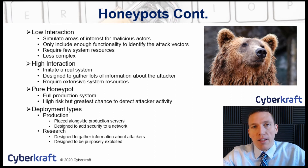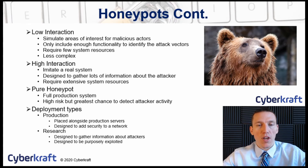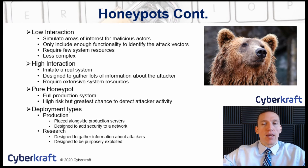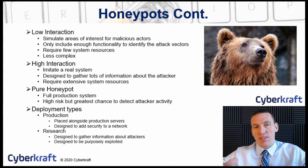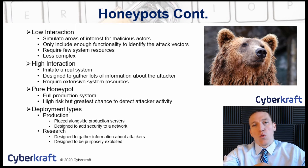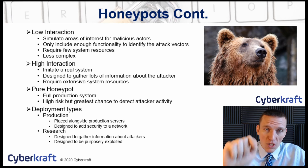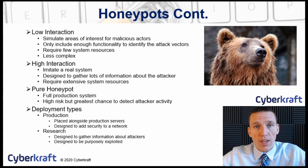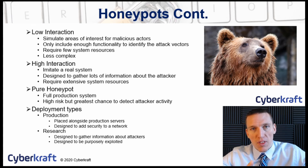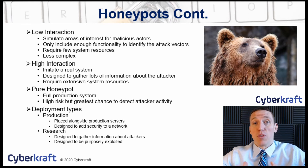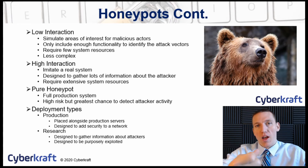A production honey pot is designed to help protect the network. These are put alongside production servers within a network to draw attackers to them. They may contain dummy data or data that's not quite realistic, or they're used to see how attackers are purposely targeting that specific network. The purpose of the production honey pot is to gather information to better protect the network and to draw attackers away from real production nodes.